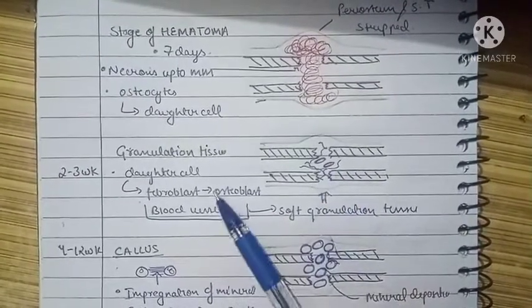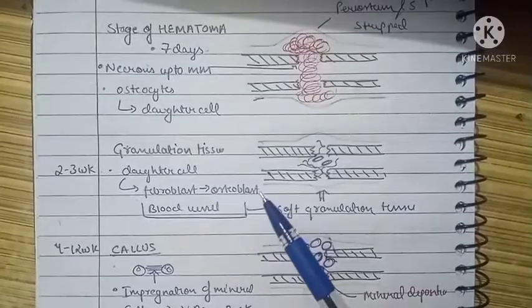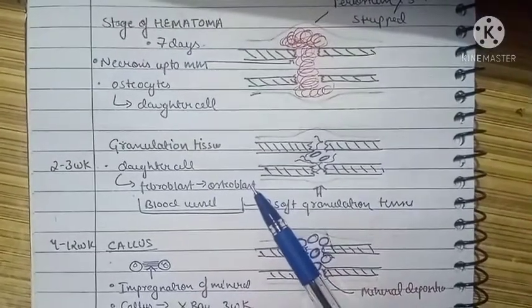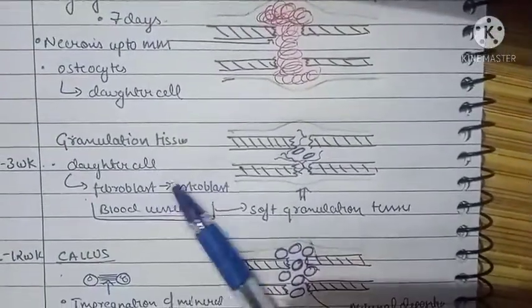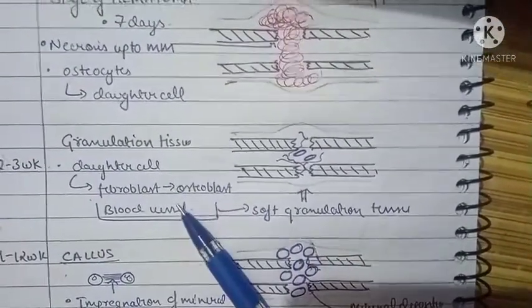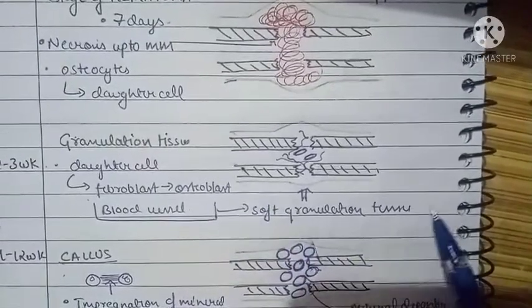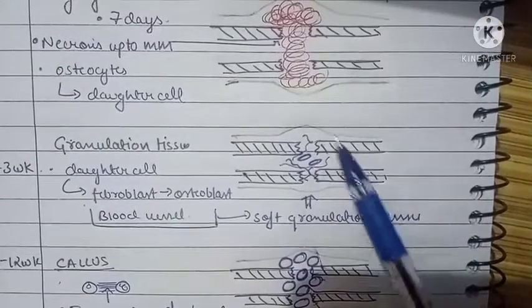There is also formation of blood vessels. All the fibroblasts, osteoblasts, and blood vessels lead to formation of soft granulation tissue at the site of fracture. This soft granulation tissue provides a non-rigid anchorage to the fractured bone.